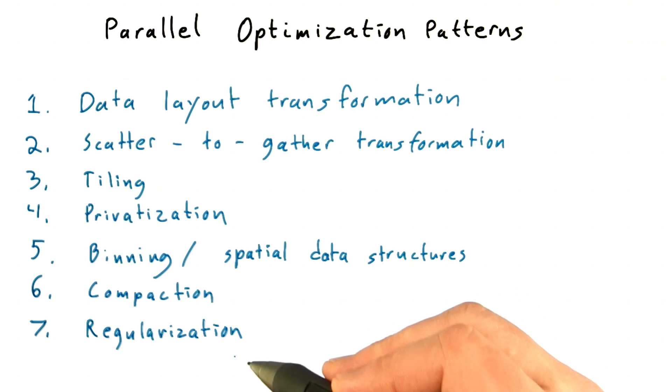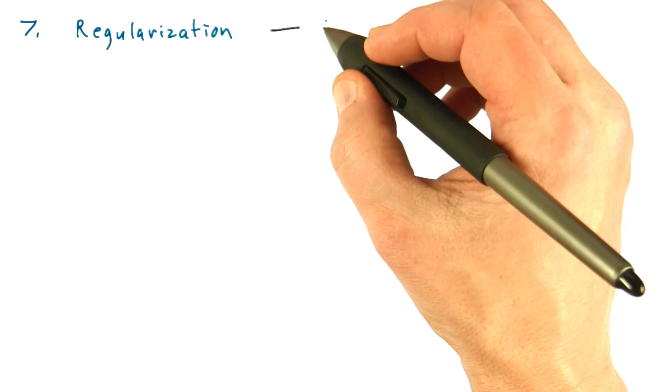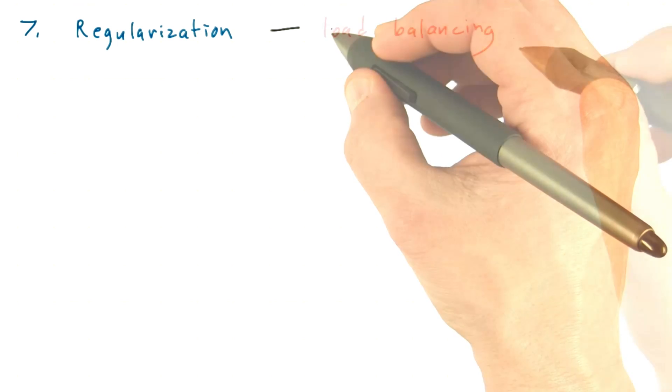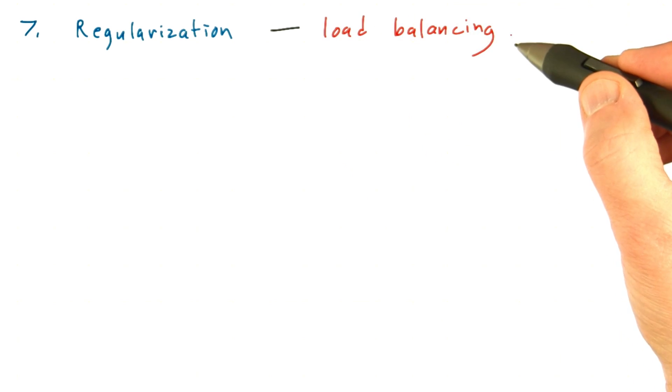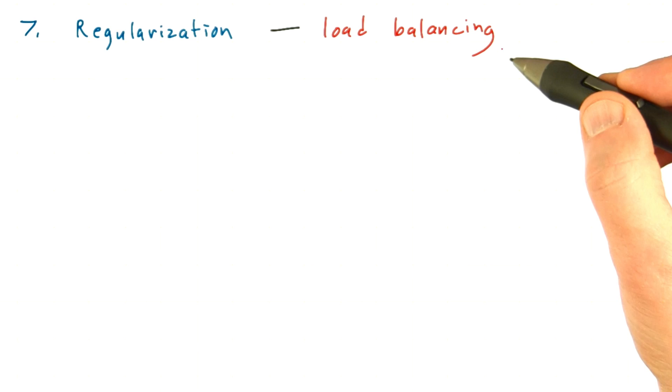Stratton and colleagues call their final technique regularization. And regularization is all about load balancing. Load balancing is a problem that's plagued parallel programming since its inception.